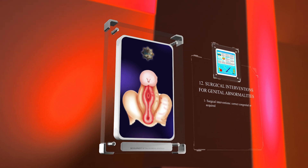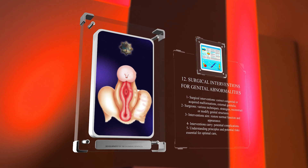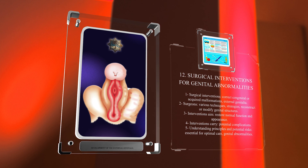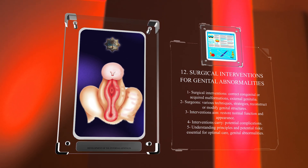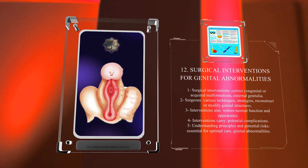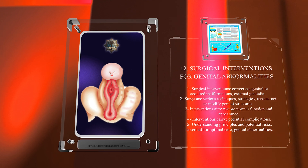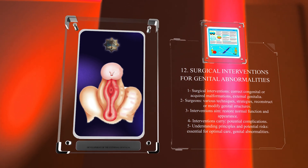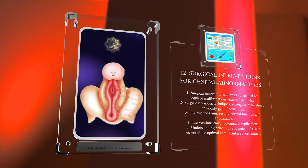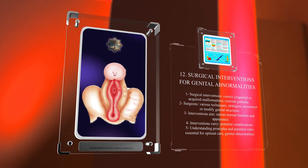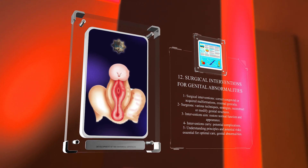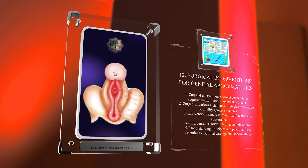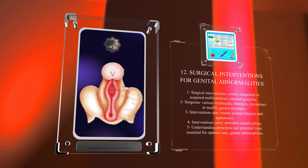Surgical interventions are often necessary to correct congenital or acquired malformations of the external genitalia. Surgeons employ various techniques and strategies to reconstruct or modify the genital structures, depending on the specific abnormalities present. These interventions aim to restore normal function and appearance, but they also carry potential complications. Understanding the principles and potential risks associated with surgical interventions is essential for providing optimal care to individuals with genital abnormalities.